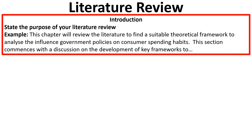Here is an example of a literature review structure. You will start with an introduction in which you state the purpose of the literature review. For example: 'This chapter will review the literature to find a suitable theoretical framework to analyse the influence of government policies on consumer spending.' This is a clear and direct purpose. After this purpose, you should explain how your literature review is arranged — for example, 'This section commences with a discussion on the development of key frameworks. The second section will do this. The third section will do this.' Give an overview of the entire section.